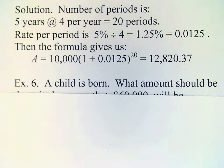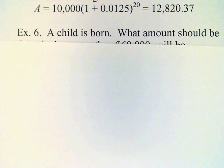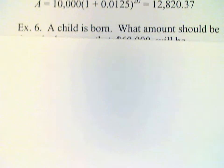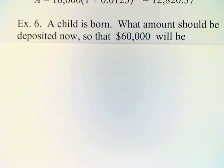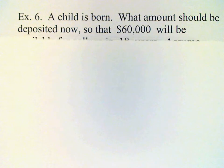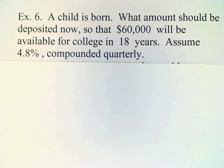Next example: a child is born. What amount should be deposited now so that $60,000 will be available for that child's college in 18 years? We're going to assume that we can get 4.8% compounded quarterly for this period of time.